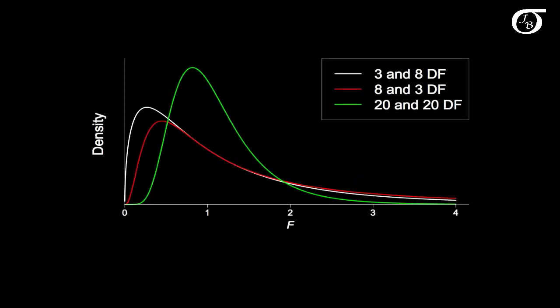Here's the PDF plotted out for three different sets of degrees of freedom. One of the first things we might note is that we do have some right skewness to this distribution. Also, this white line — an F distribution with 3 degrees of freedom in the numerator and 8 in the denominator — is different from the red line, which is an F distribution with 8 degrees of freedom in the numerator and 3 in the denominator. So the distribution is different when we flip the degrees of freedom around.